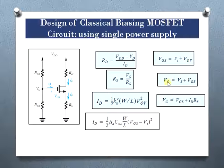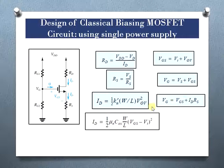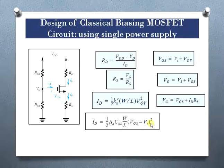The gate voltage equals source voltage plus gate-to-source voltage. These are the different ways of calculating the gate voltage, and we should know how to compute the DC drain current using the equation: ID = (1/2) · μN·COX · (W/L) · (VGS − VT)². Using these design parameters, we will solve the numericals.